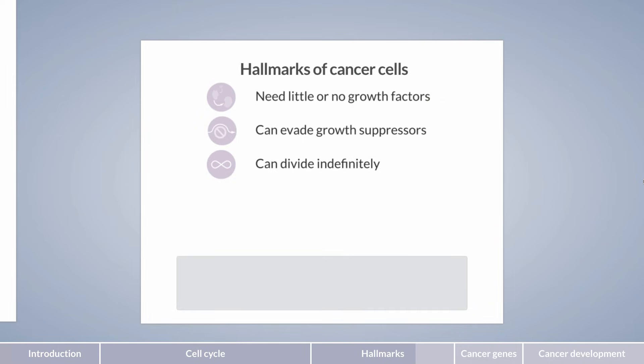Fourth, cancer cells also show increased genetic instability and therefore have a higher frequency of mutations. This occurs as a result of the inefficient repair of DNA damage during the cell cycle and does not induce programmed cell death.